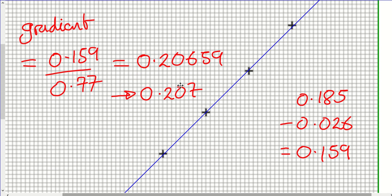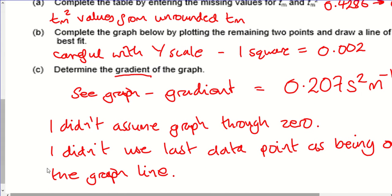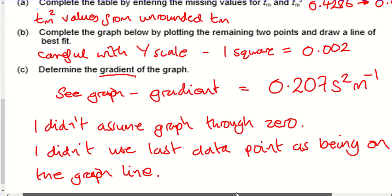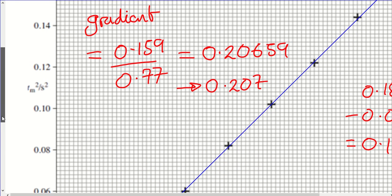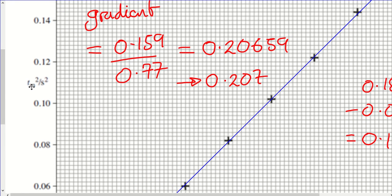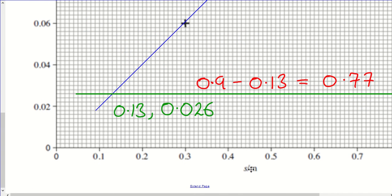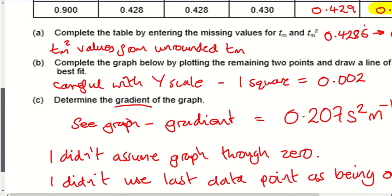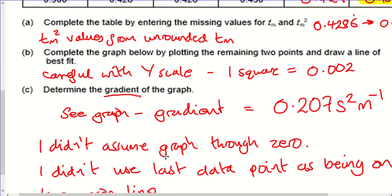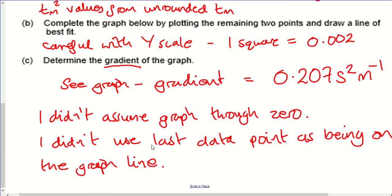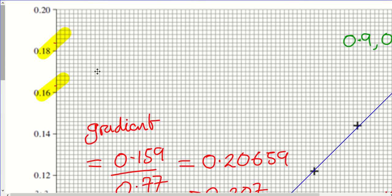Rounding to three significant figures gives a gradient of 0.207. You'll lose marks if you don't state the units: the y-axis is time in seconds squared and the x-axis is distance in metres, so the units are s² m⁻¹. Also note: I avoided being tempted to use the last plotted point as the end of my gradient triangle, since it isn't necessarily perfect data.